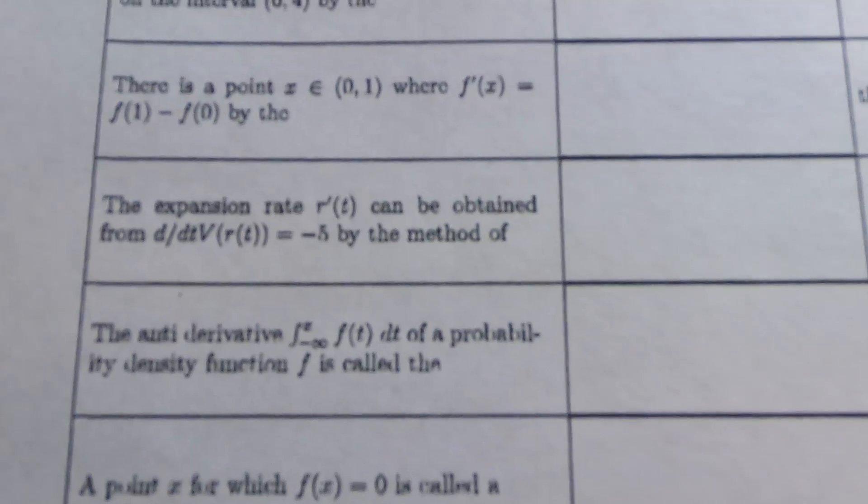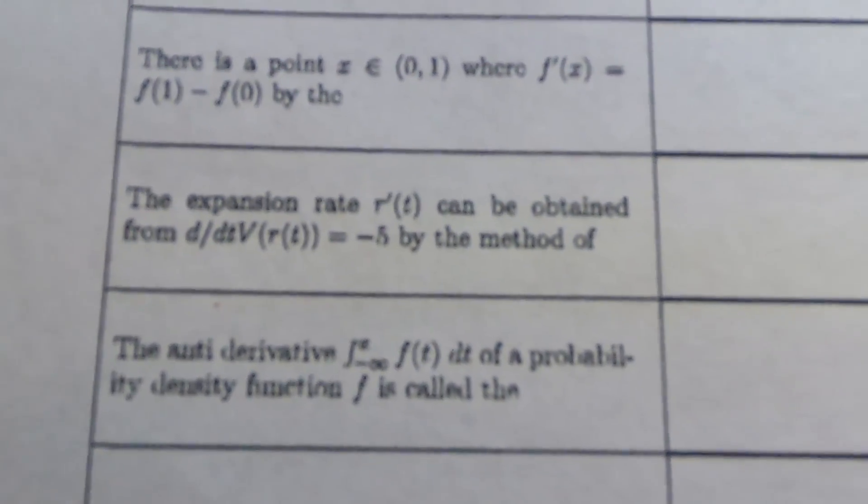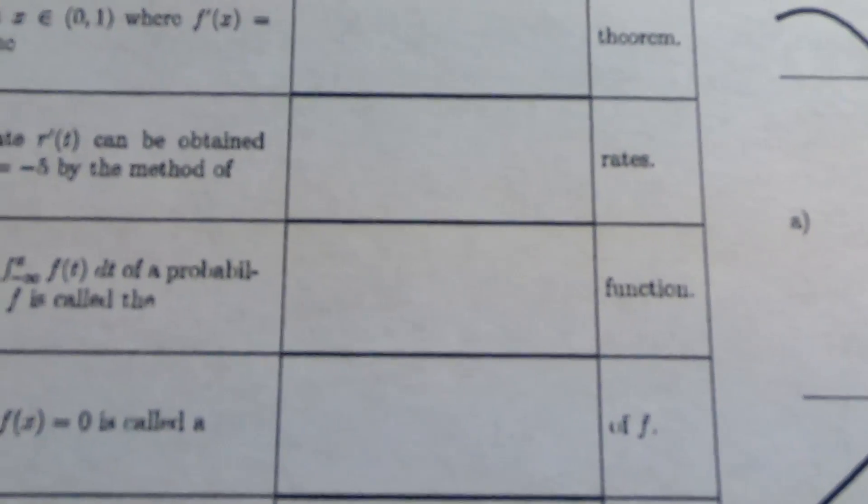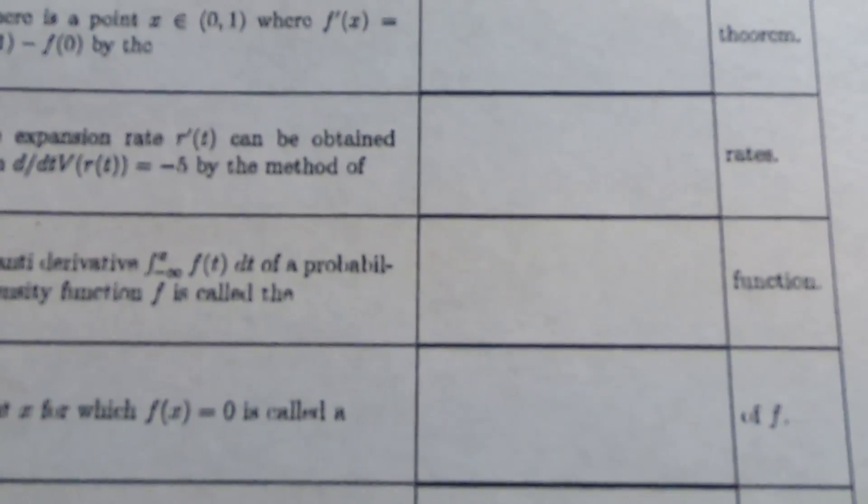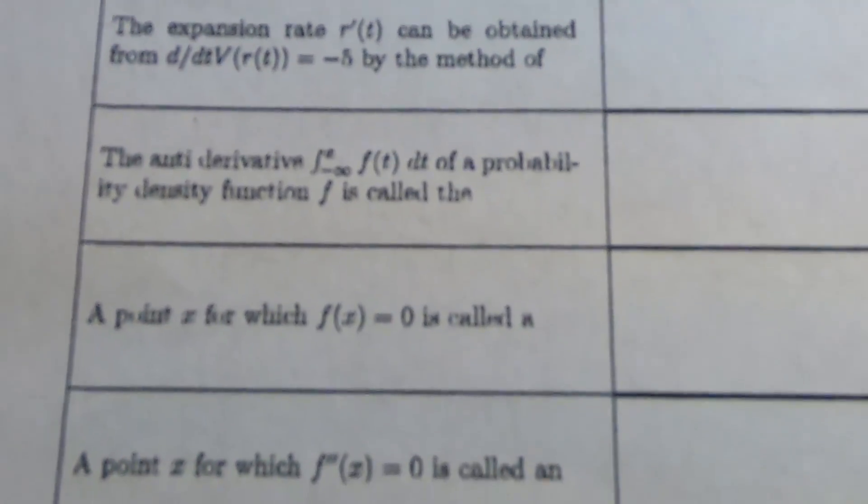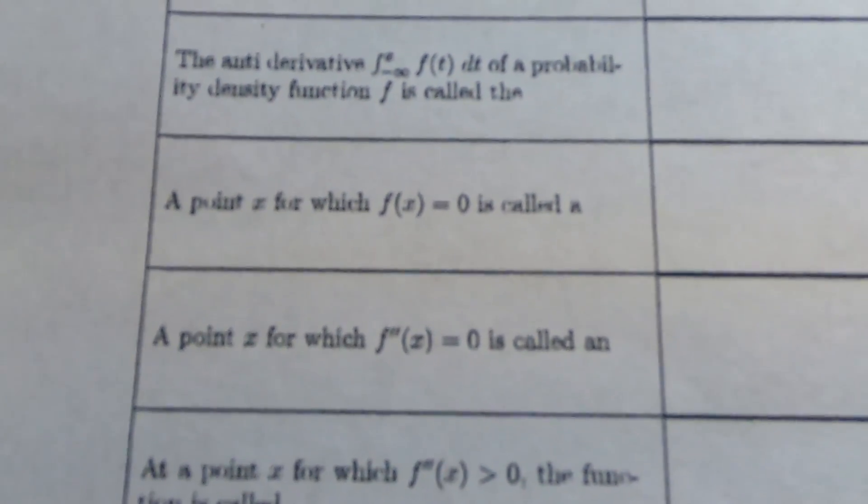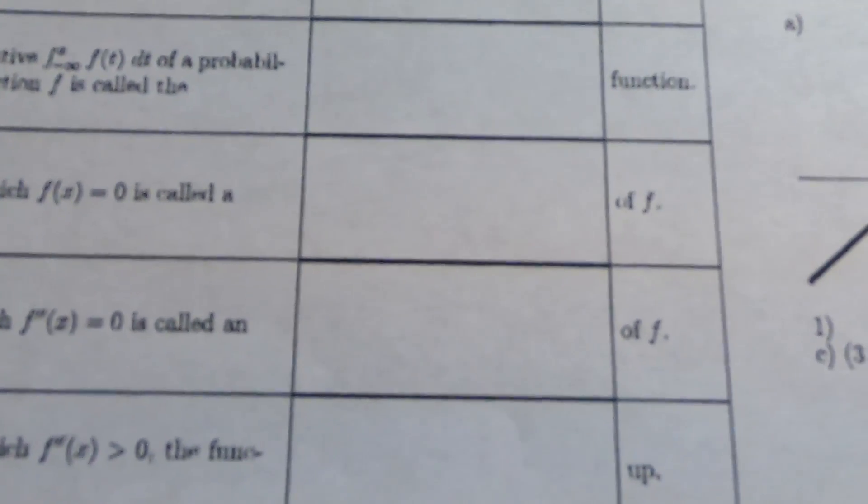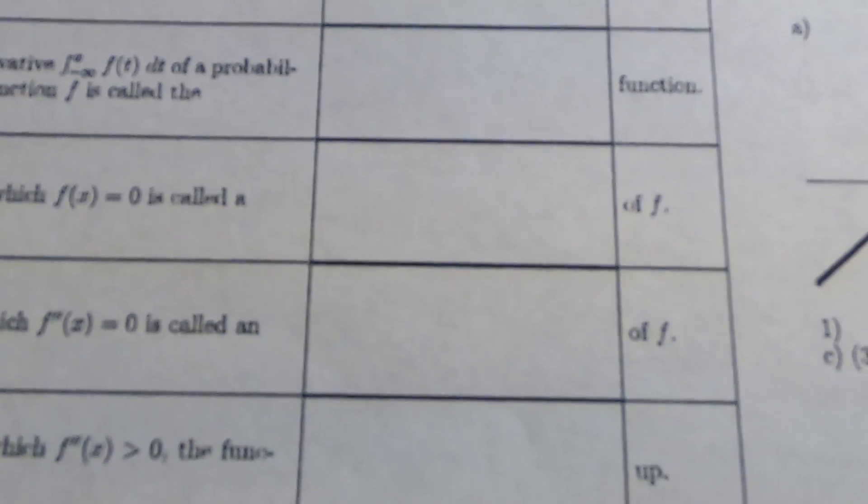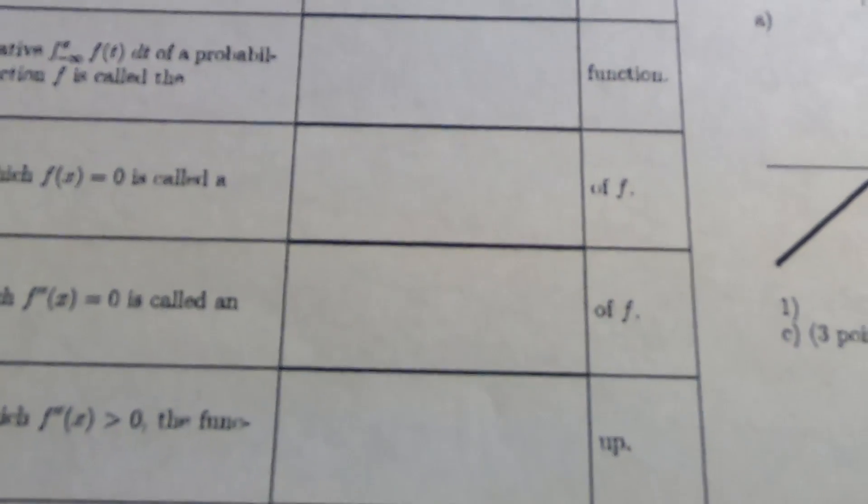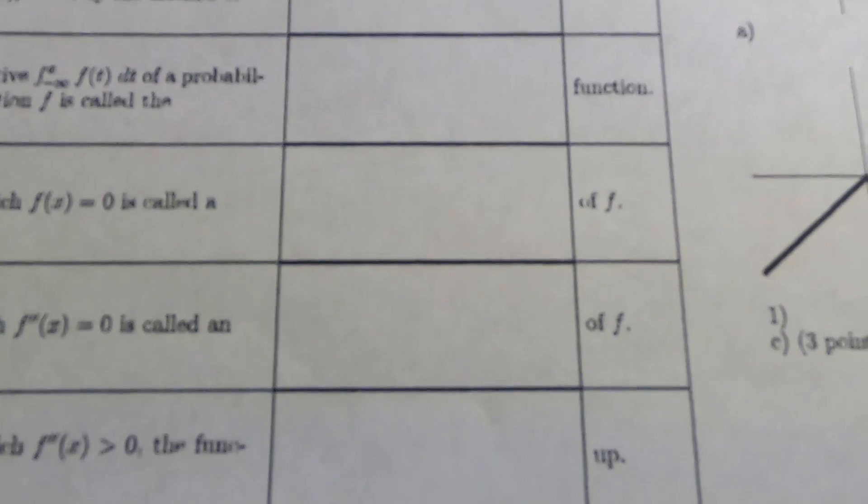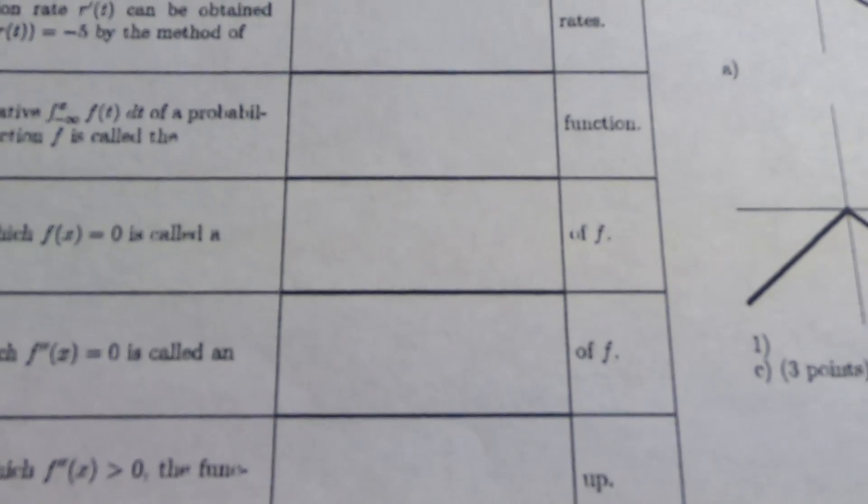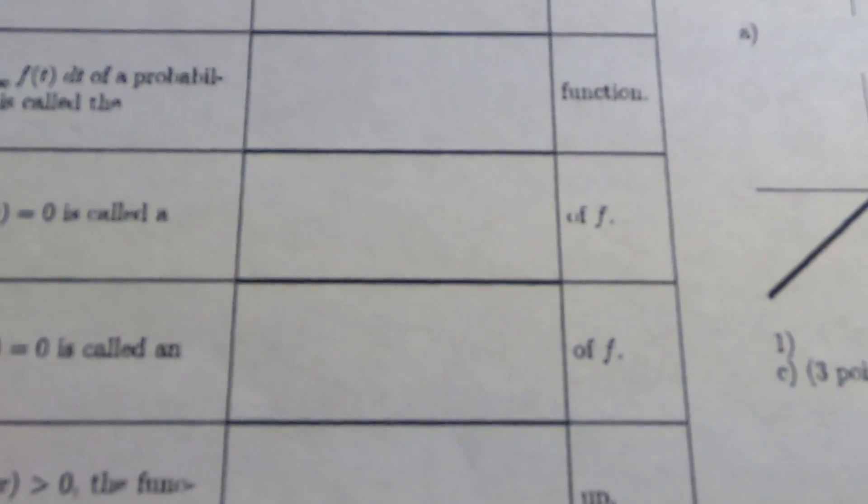Ooh, look at this one. This one might cause people problems. The antiderivative of a probability density function f is called the cumulative distribution function. So if you're taking Calc 1, you may not know that. This one here caused me some problems. Let me scroll down so you can see it. This one. A point x for which the second derivative is equal to zero is called an inflection point. So I was thinking, okay, that point doesn't have a name, right? Because I think they mean to say inflection point. But an inflection point, by most definitions, is an ordered pair, because it's a point where the concavity of the graph changes, right? So the answer, though, is inflection point.